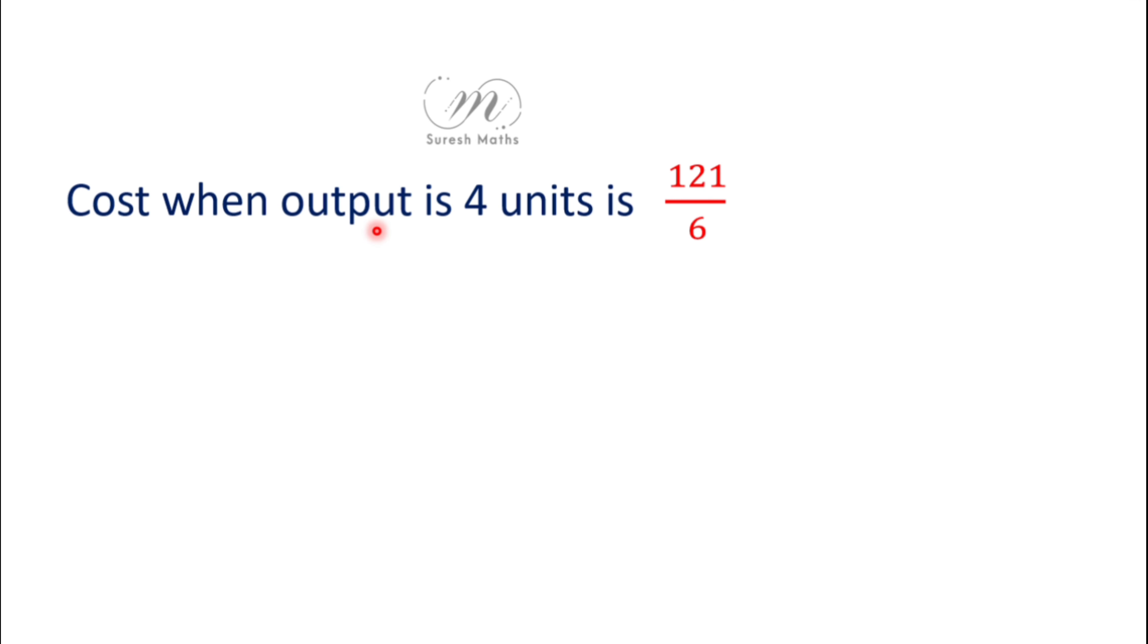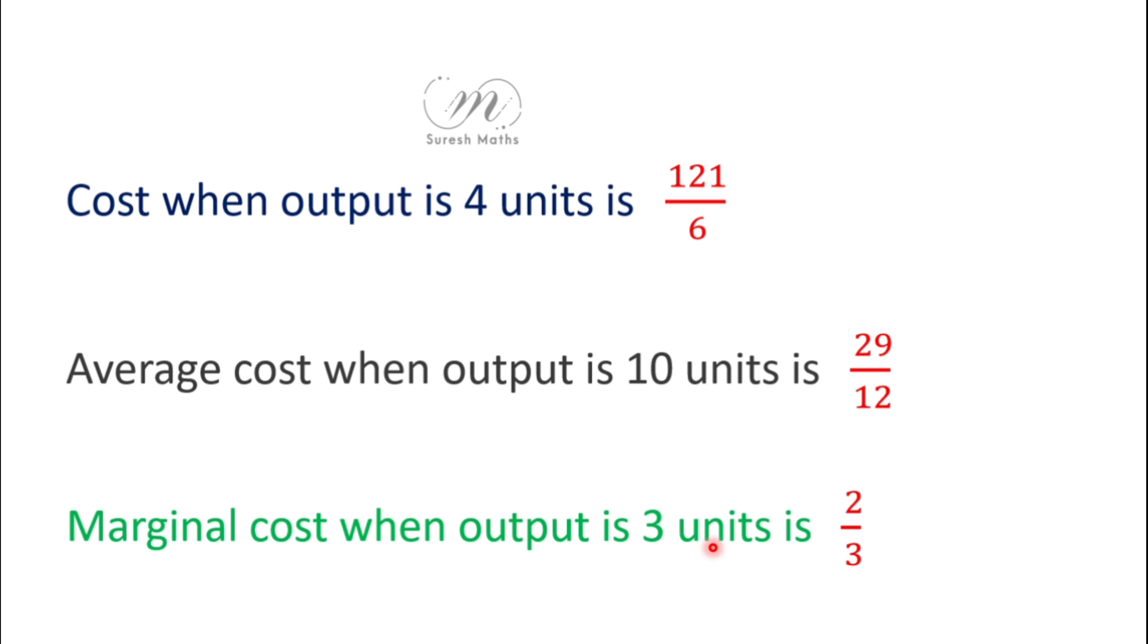Cost when output is x = 4 is 121/6. Average cost when x equals 10 is 29/12. Marginal cost when x equals 3 is 2/3. That's all.